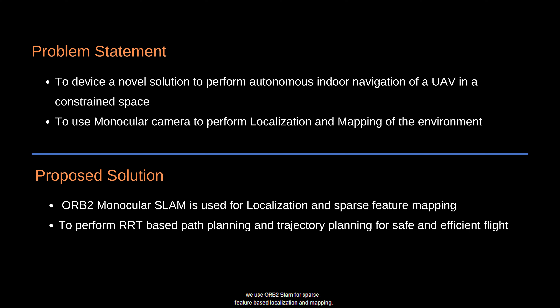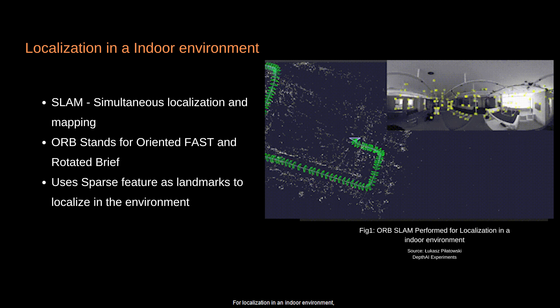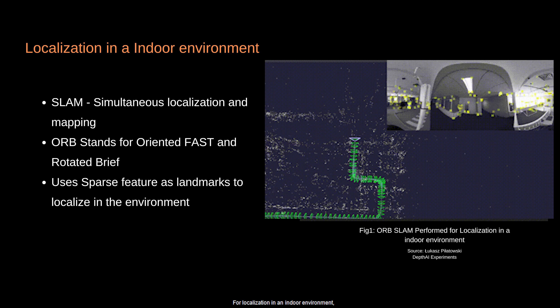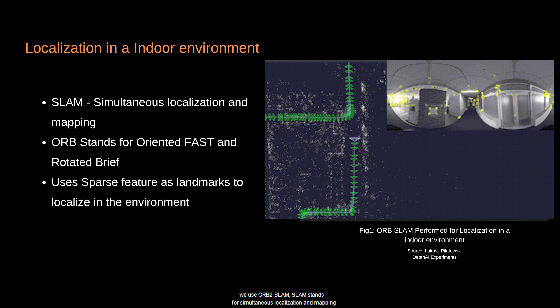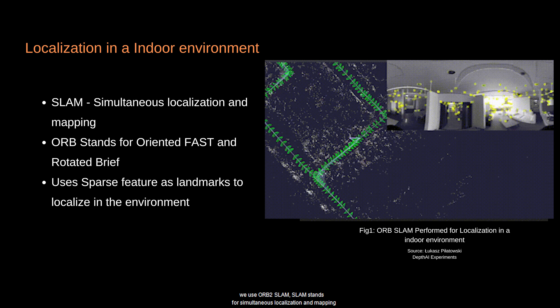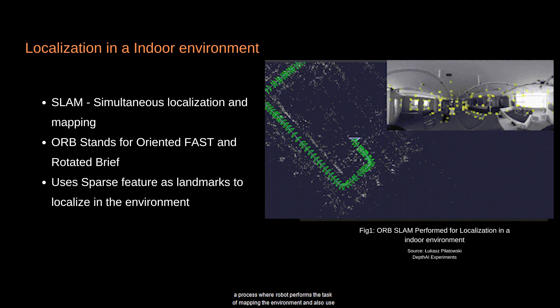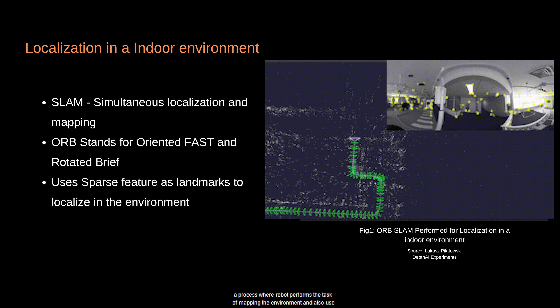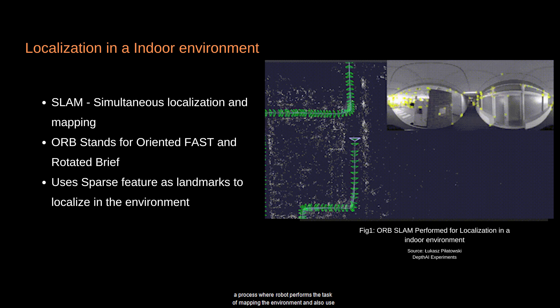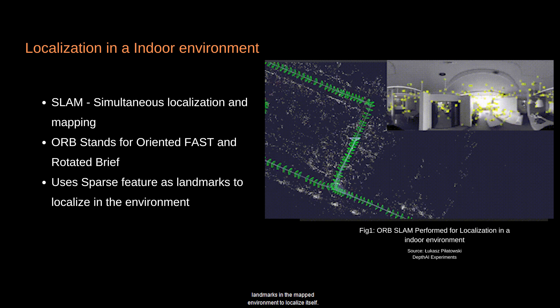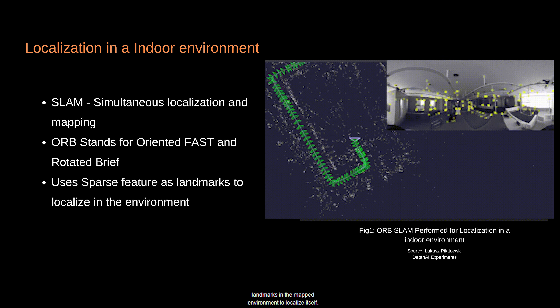We use vision-based localization techniques to perform the task of localization. For this purpose, we use ORB2 SLAM for sparse feature-based localization and mapping. We also propose to use RRT* for 3D path planning and 5th order cubic splines for trajectory planning. For localization in an indoor environment, SLAM stands for simultaneous localization and mapping — a process where a robot performs the task of mapping the environment and also uses landmarks in the mapped environment to localize itself.